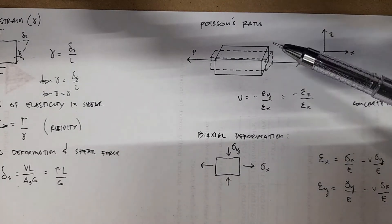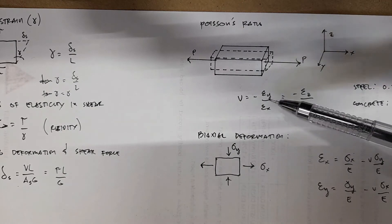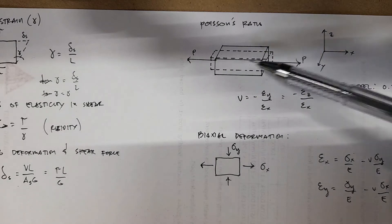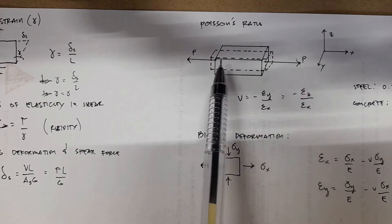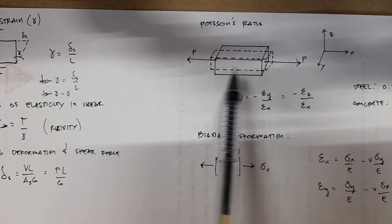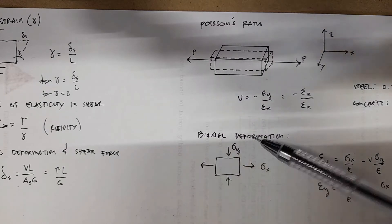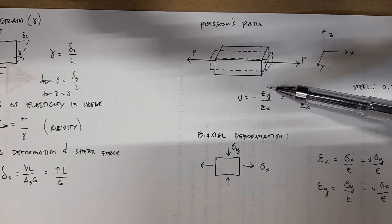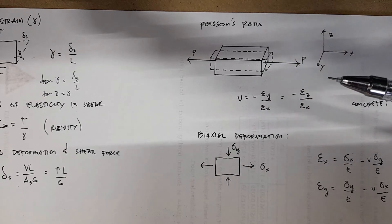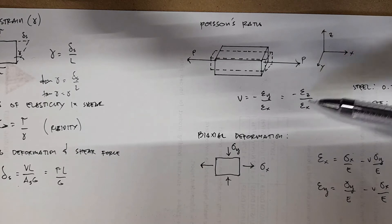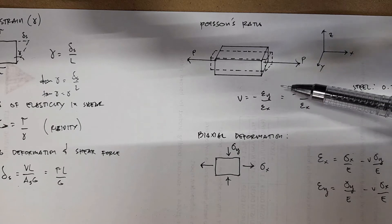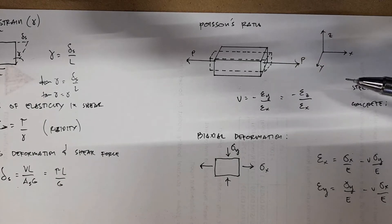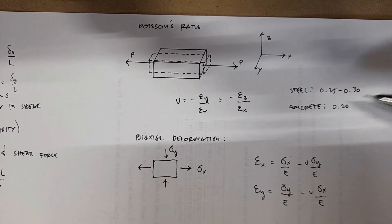We also have Poisson's ratio, which is just the ratio of your longitudinal strain to your transverse or sidewise strain or deformation. In this example, with tensile forces in the X direction, you expect a longitudinal deformation in X and transverse deformations in the Y and Z directions. Poisson's ratio V is the ratio of transverse strain over longitudinal strain. The negative sign denotes that you expect shortening or contraction along the transverse direction. For steel, V ranges from 0.25 to 0.3; for concrete, it's 0.2.